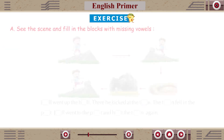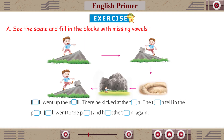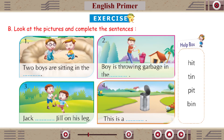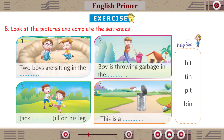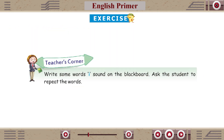Exercise A: See the scene and fill in the blocks with missing vowels. Exercise B: Look at the pictures and complete the sentences. Teacher's Corner: Write some words with I sound on the blackboard. Ask the students to repeat the words.